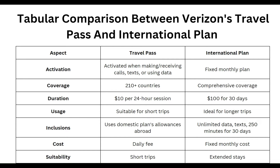For activation, Travel Pass activates when making or receiving calls, texts, or using data, while the International Plan is a fixed monthly plan. For coverage, Travel Pass covers 210 plus countries, and the International Plan offers comprehensive coverage. For duration, Travel Pass costs $10 per 24-hour session, while the International Plan is $100 for 30 days.